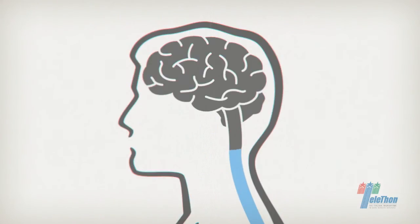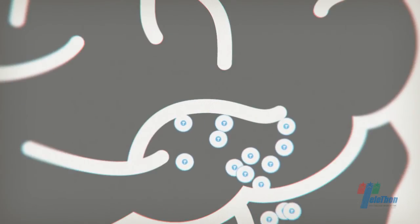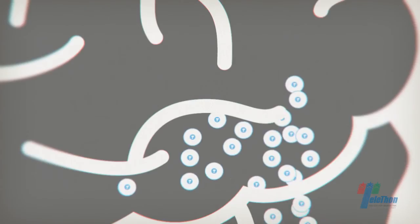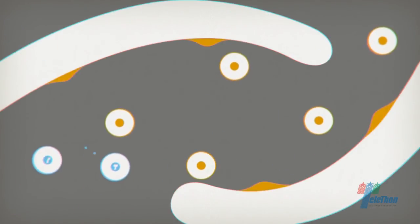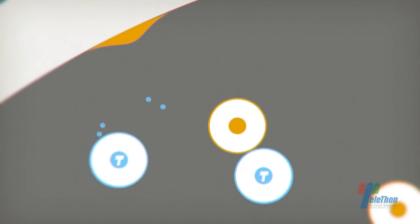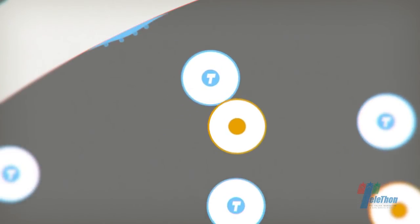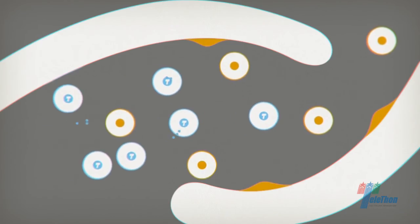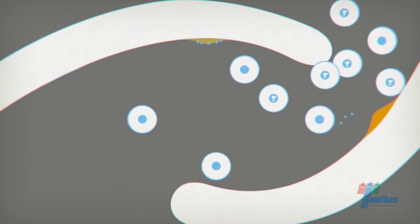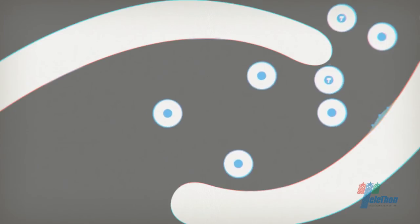The offspring of the cells we have altered leave the blood stream and arrive at the brain, where they set up home. And here not only can they assimilate the waste material formed in the patient, but also release part of the functioning enzyme which is captured by other cells that in turn become able to assimilate waste material and correct their defect.